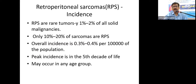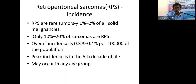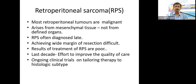Retroperitoneal sarcomas are malignant tumors arising in the retroperitoneum, comprising one to two percent of all solid malignancies. Sarcomas are more common in the extremities and trunk; retroperitoneal sarcomas constitute only 10 to 20 percent. The overall incidence is 0.3 to 0.4 per one lakh of the population, with peak incidence in the fifth decade of life, though they may occur in any age group.